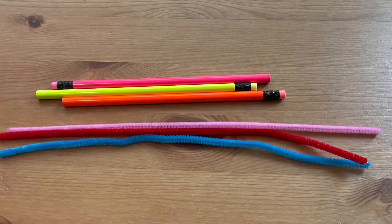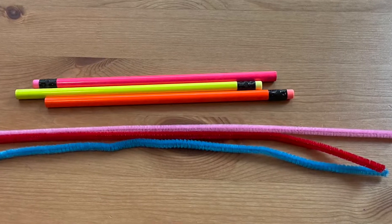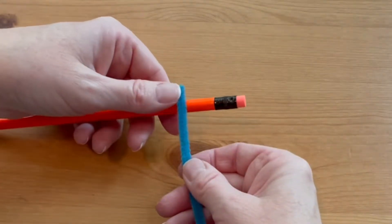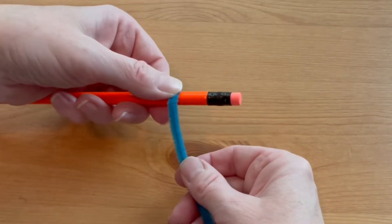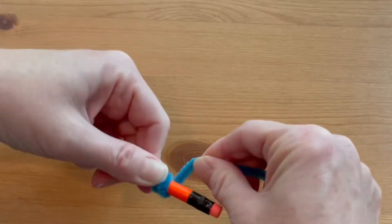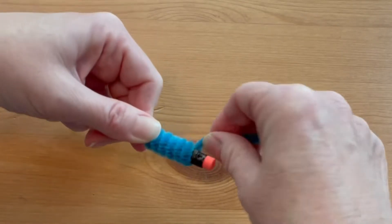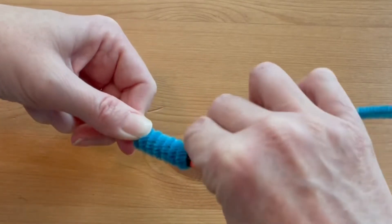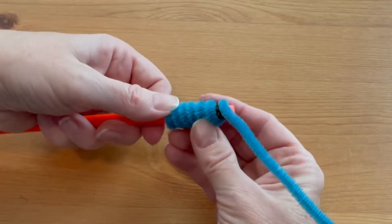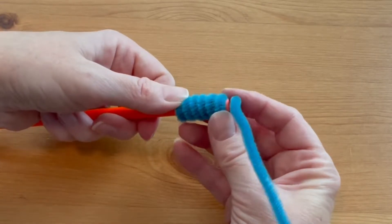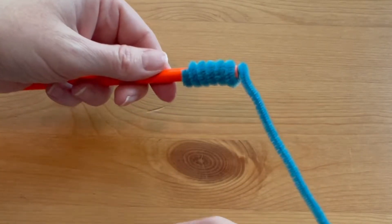For each pencil you will need one pencil and one pipe cleaner. To make the coil pencil, hold the end against the pencil and coil the pipe cleaner around about seven coils, making them pretty tight, and then push that up so it covers up the eraser of the pencil.